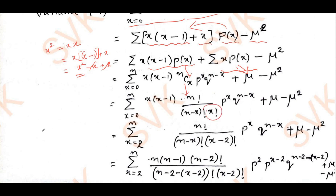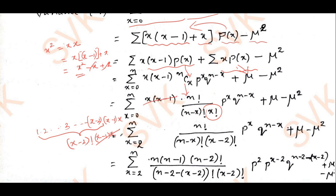Further, x! can be expressed as 1·2·3·…·(x−2)·(x−1)·x, so x! = (x−2)!·(x−1)·x. The x and (x−1) terms in the numerator cancel with the denominator, leaving (x−2)!. Now I need to express all terms with x replaced by (x−2) and n replaced by (n−2), so x starts from 2 to n. I rewrite n! as n·(n−1)·(n−2)!.